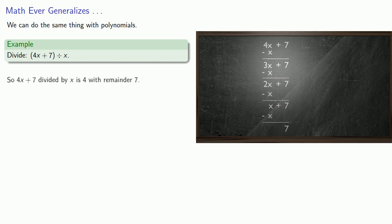So we can say that 4x plus 7 divided by x is 4, with remainder 7. And again, we can also express this as a fraction. 4x plus 7 divided by x is 4 plus 7 over x.